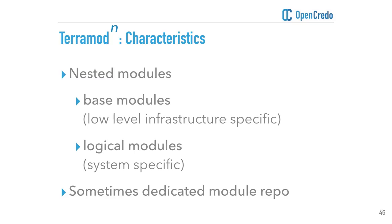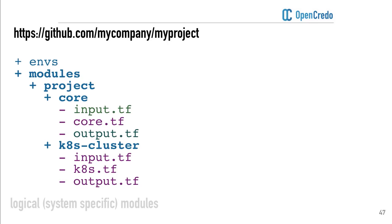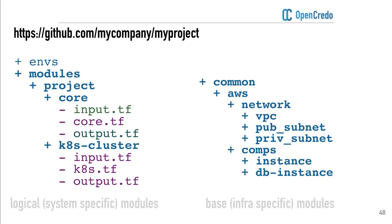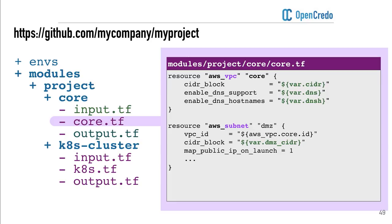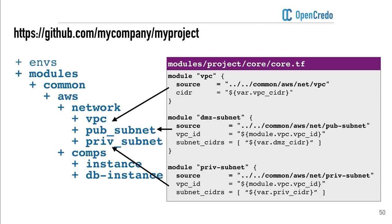Where we left off, we had our structure with environments, module definitions, and logically composed modules as before. Now we simply add these base modules as well. An example is very low-level modules like 'this is exactly how I create a VPC in Amazon' or 'this is how I create a public or private subnet in Amazon.' Previously in our core module we had all the direct resources being defined — the VPC and the subnet. This changes now to the core module being composed of base modules itself. You can also compose system modules from system modules and base modules from base modules.